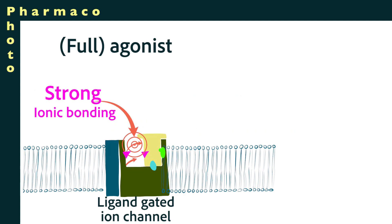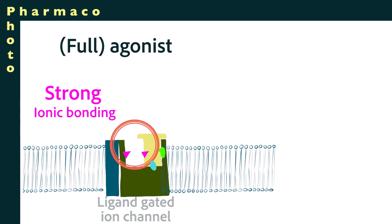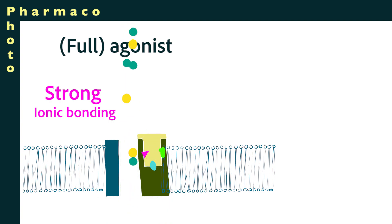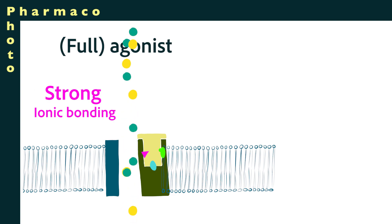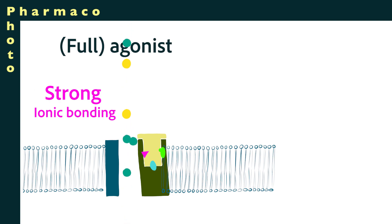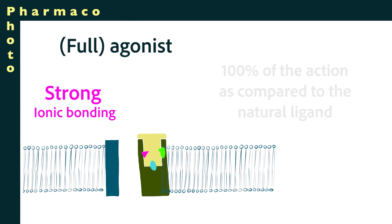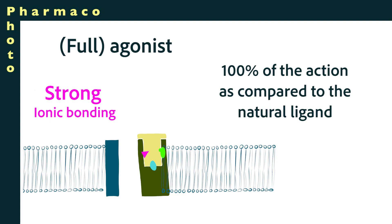In the ligand-gated ion channel example, that conformational change causes a portion of the molecule to pull together, opening up a channel and allowing calcium or other ions from outside the cell to travel through the channel into the cell. A full agonist for that receptor is a substance that does exactly the same as the natural ligand.